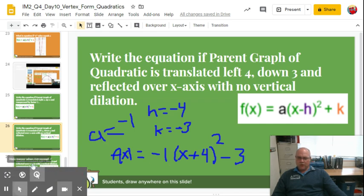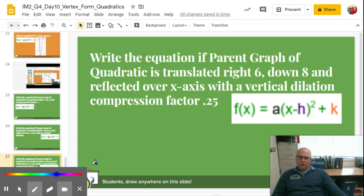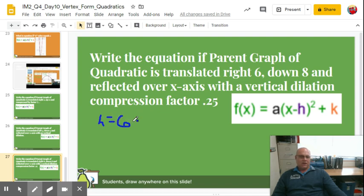All right. Last one. This time it's translated right 6. So that tells me h is 6. Down 8. So k equals negative 8. Reflected over the x-axis. So we know that a is going to be a negative value. And then it has a vertical dilation. It says it's compression factor 0.25. So a is negative 0.25.